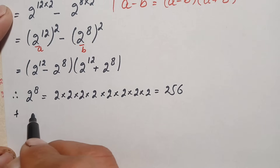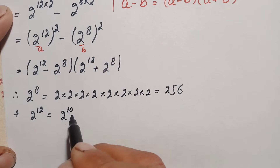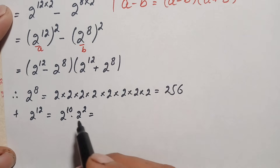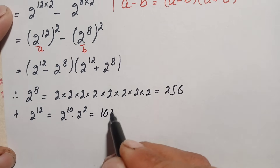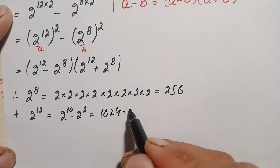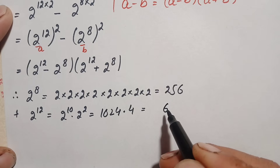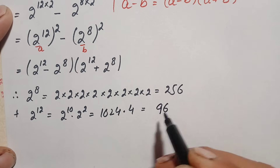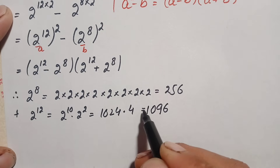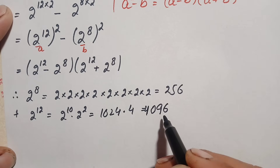Next we find 2 raised to power 12, written as 2 raised to power 10 times 2 raised to power 2. Since 2 raised to power 10 is the well-known number 1024, and 2 raised to power 2 is 4, we multiply 1024 times 4. The calculation gives us 4096. So 2 raised to power 12 equals 4096.